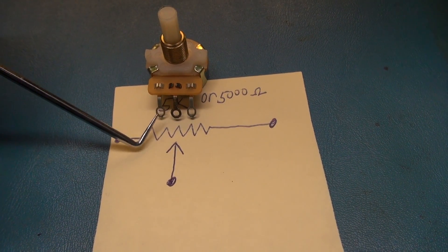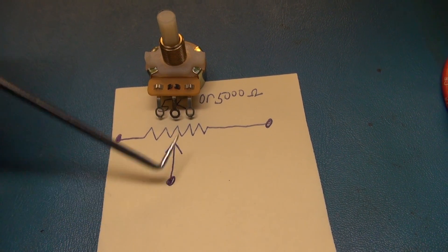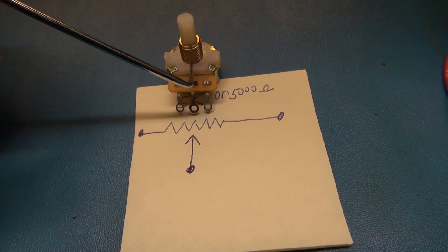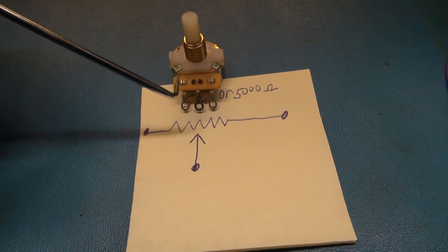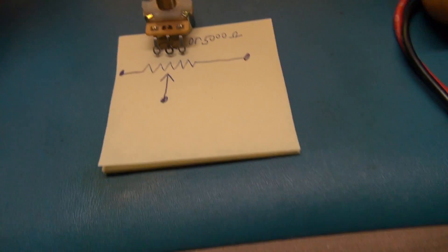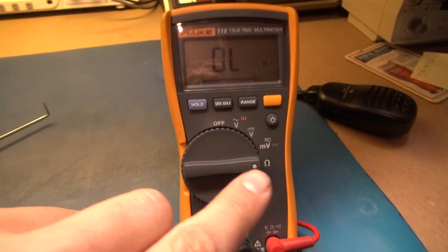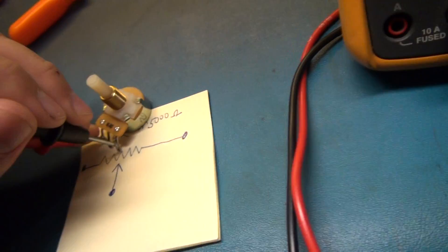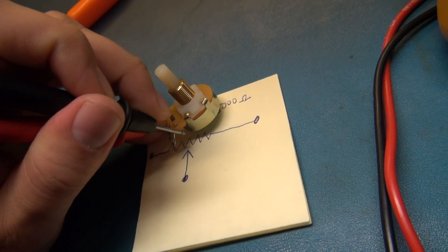If you want to test total resistance across this to make sure it isn't an open potentiometer, you can test from here to here. We'll show that on the meter - set it to ohms.